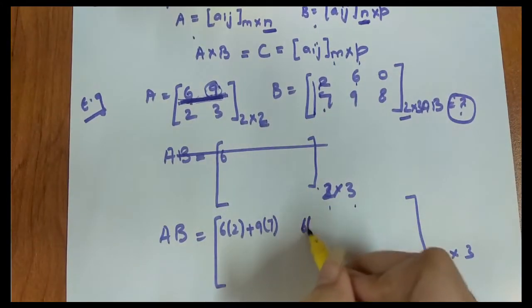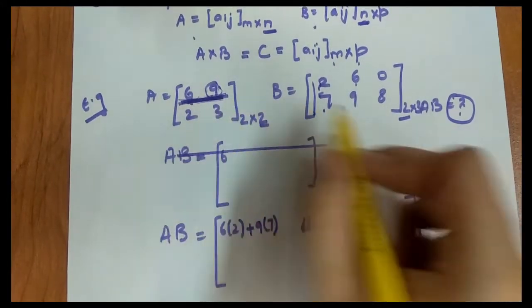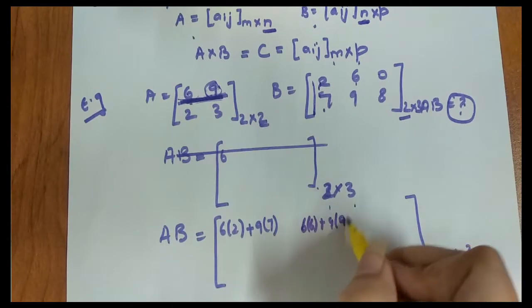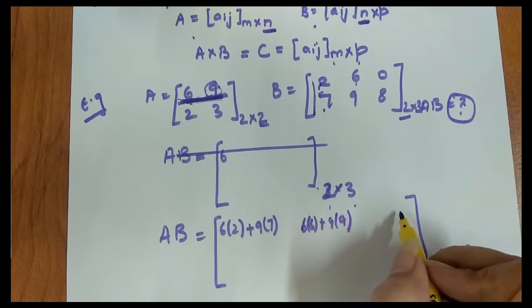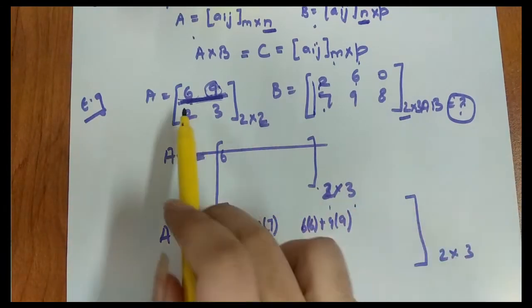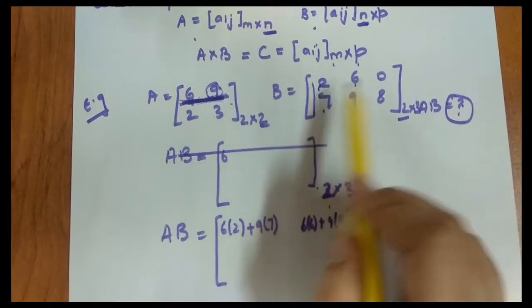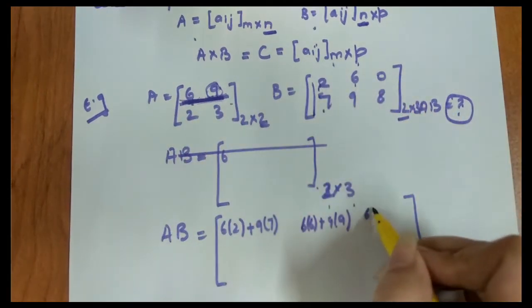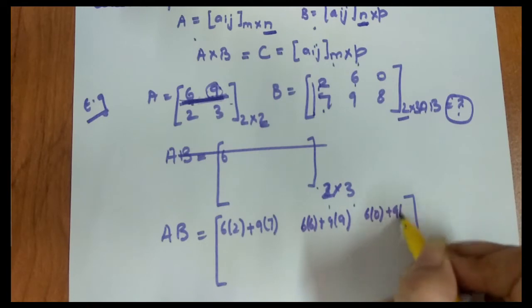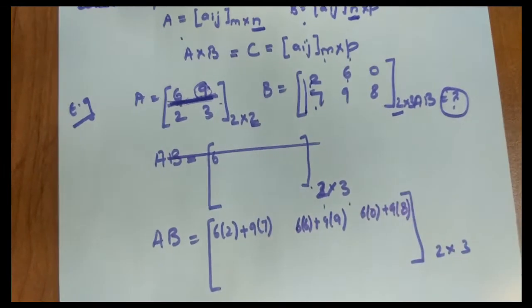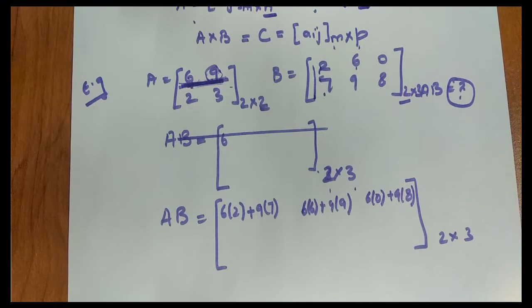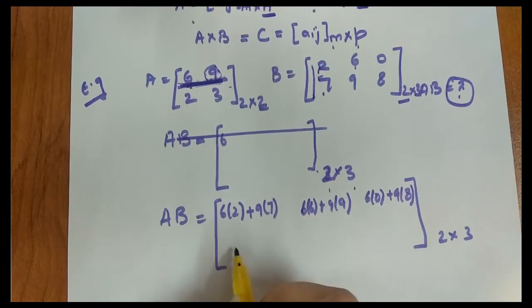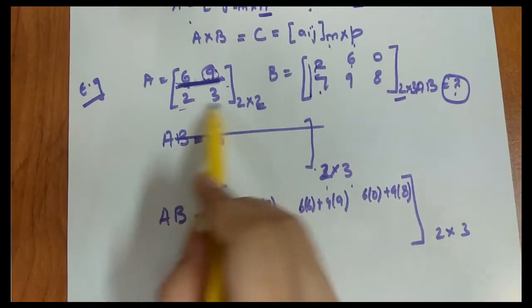So what will be a_12, first row second column? First row of first matrix, second column of second matrix. Similarly, 6 times 6 plus 9 times 9. For a_13, first row third column, it's 6 times 0 plus 9 times 8. So the first row is complete in the result matrix. Now the second row.